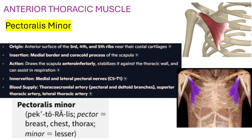Action: draws the scapula antero-inferiorly — so forward and at the same time inferior. Stabilizes it against the thoracic wall and can assist in respiration. Innervation is medial and lateral pectoral nerves, C5–T1.